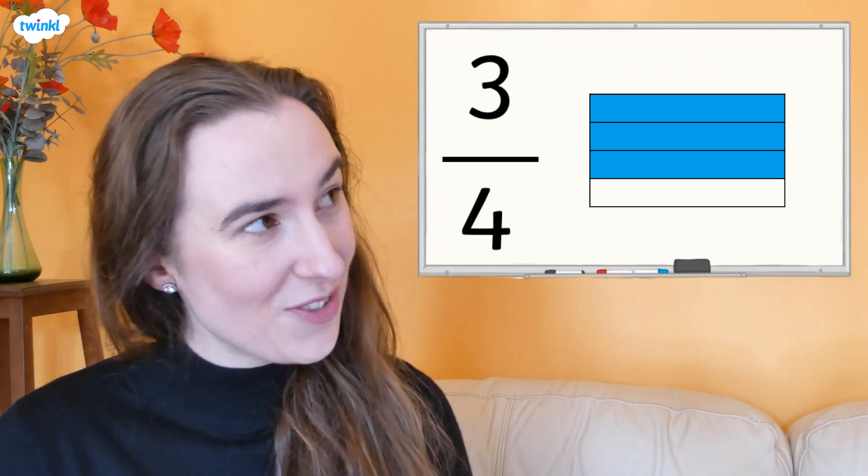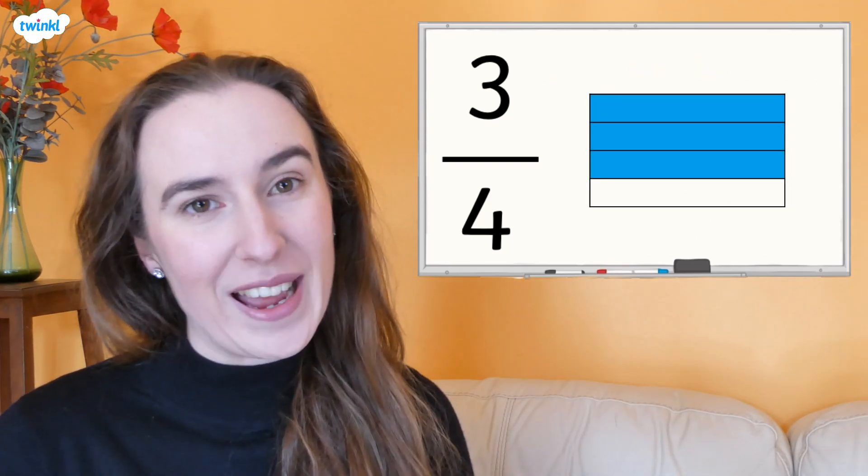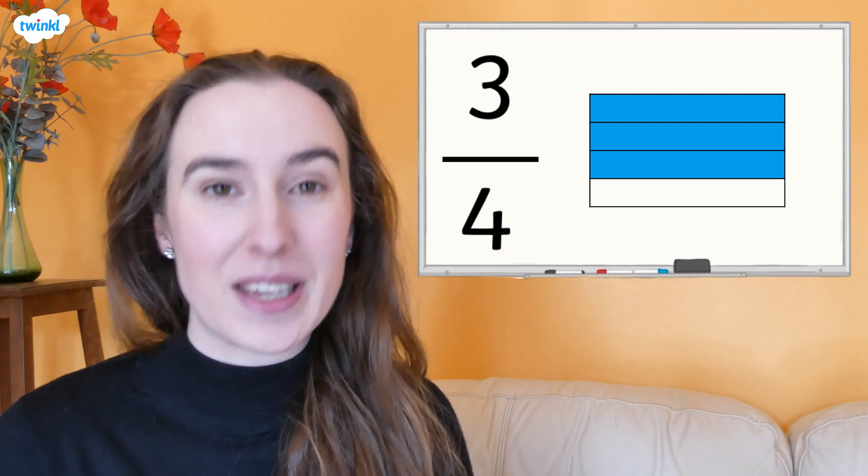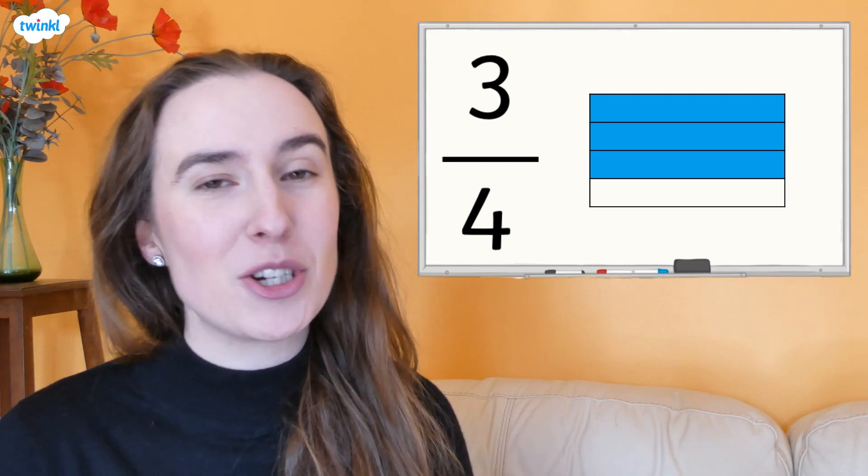So in this rectangle showing three quarters, the whole rectangle is divided into four equal parts and three of them are shaded blue.